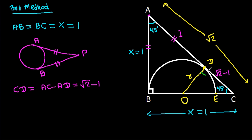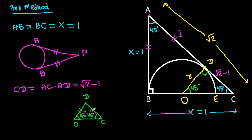Since this angle is 90 degrees, the other angle is 45 degrees. In triangle OCD, these two angles are both 45 degrees, so OD equals CD. OD is R and CD is root 2 minus 1, so R equals root 2 minus 1. From R we can find the area of the semicircle: pi R squared over 2.